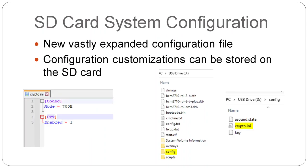With all these new features, it's become necessary for users to be able to adjust them. Saving settings to the SD card seems the natural place. This can be useful for changing transmission mode, enabling push-to-talk, etc. The settings are copied to memory at startup, so you can still use the system with the SD card removed. In the future, I may make some sort of UI for creating these customizations, but for now, hand-editing is required.